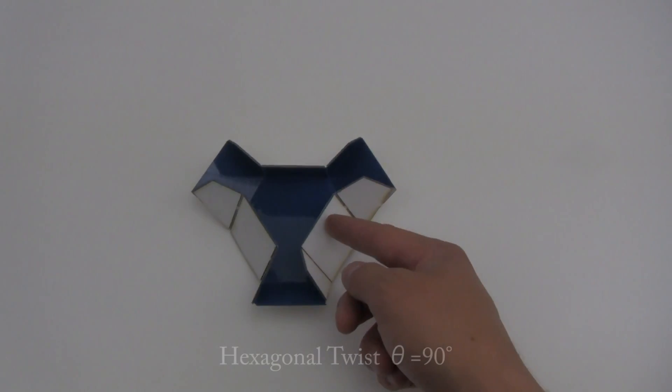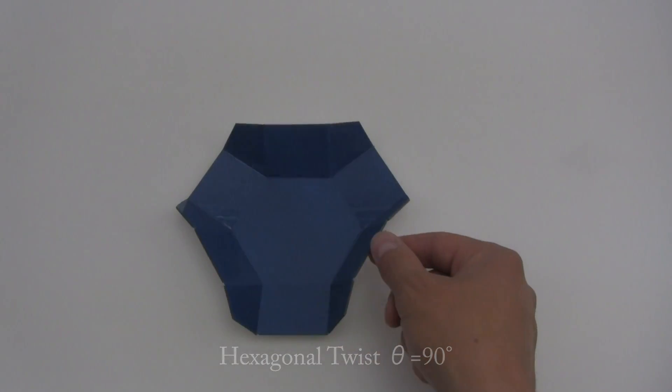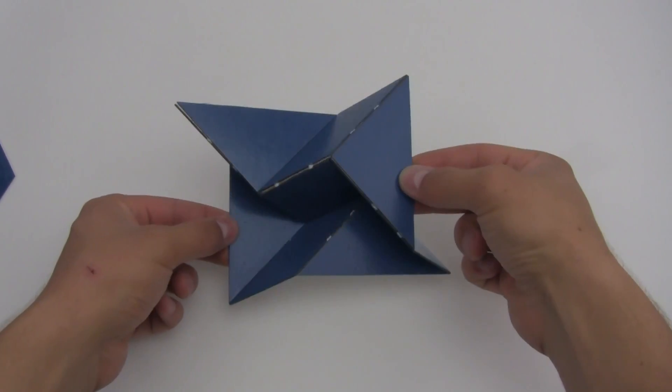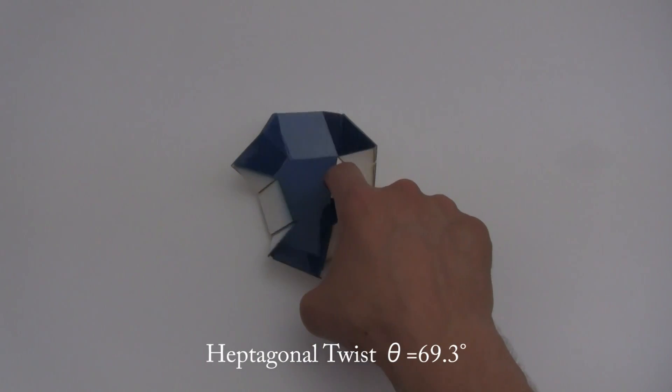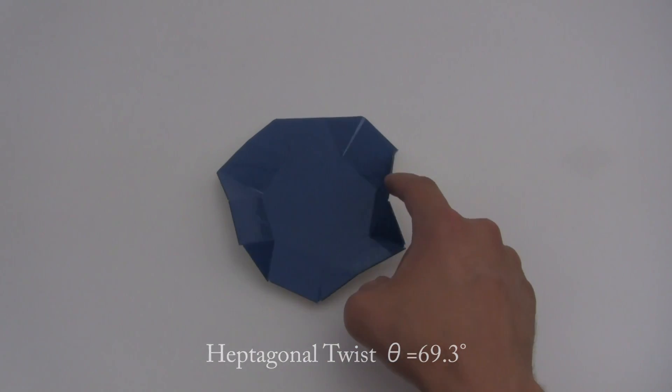This paper presents a straightforward mathematical approach to determining if a twist is rigidly foldable. This can also be used to design new origami twists that are rigidly foldable.